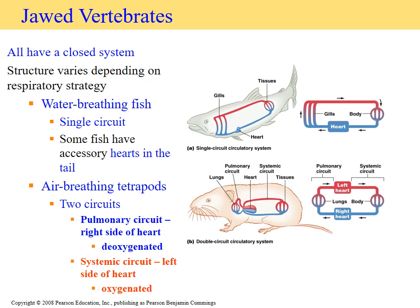Let's start exploring vertebrates, beginning with jawed vertebrates — all have a closed circulatory system. There are two systems to consider: water-breathing fish and air-breathing tetrapods. For water-breathing fish, there are no lungs — the gills provide all respiratory exchange, dropping off carbon dioxide and picking up oxygen. This also affects the circulation pattern when we look at the illustration.